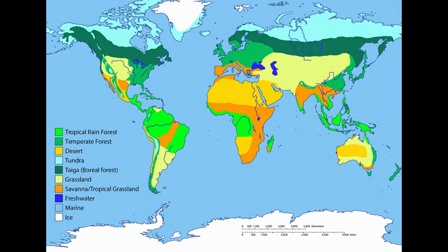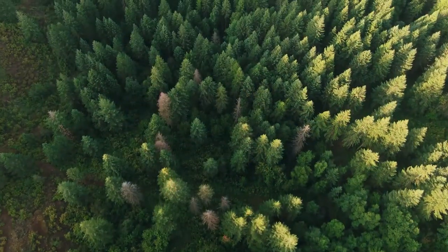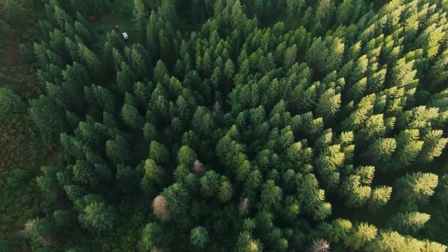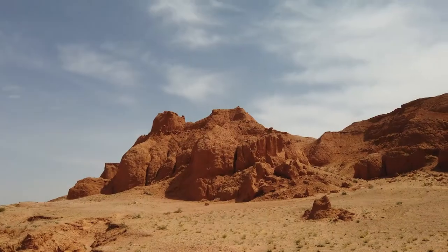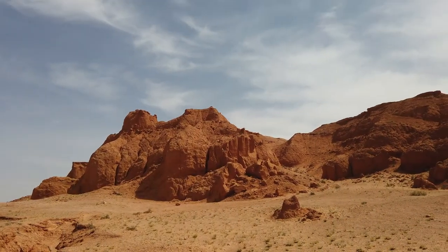A biome is a large area of land that is characterized by its temperature, weather, location, and by the plants and animals that live there. On earth we have both biomes on land and underwater. A biome on land is also called a terrestrial biome.